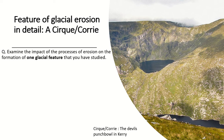The last couple of lessons we looked at features of glacial erosion and being able to identify and label them, but we must know one feature of glacial erosion in detail. We also must know a feature of glacial deposition in detail — that'll be covered in a later lesson. A typical exam question is: 'Examine the impact of the processes of erosion on the formation of one glacial feature that you've studied.' You could also be asked simply to talk about the formation of one glacial feature, or to talk about a feature of erosion you have studied.